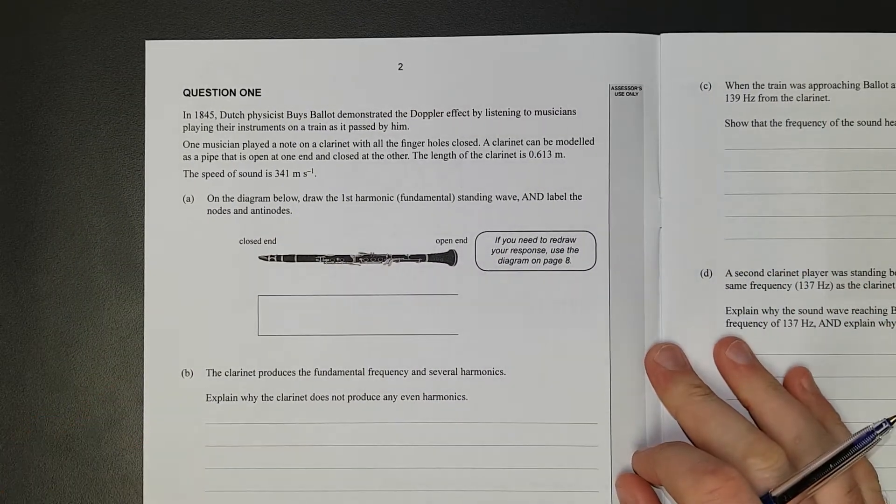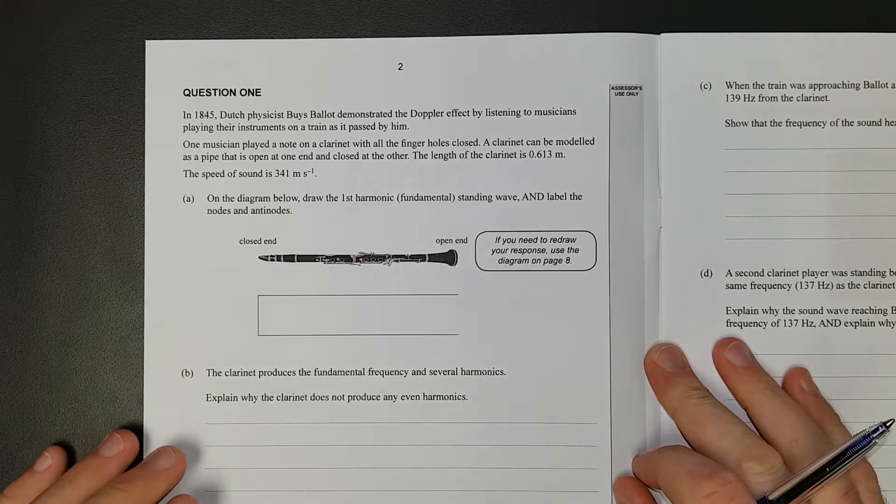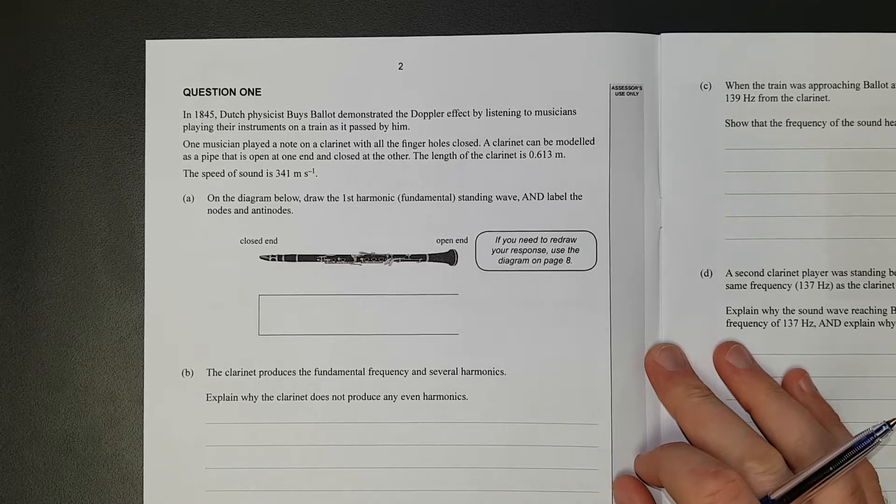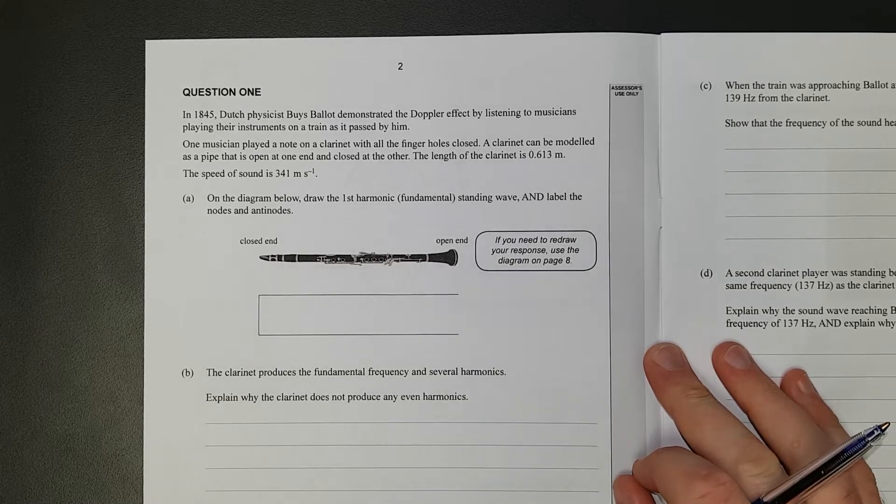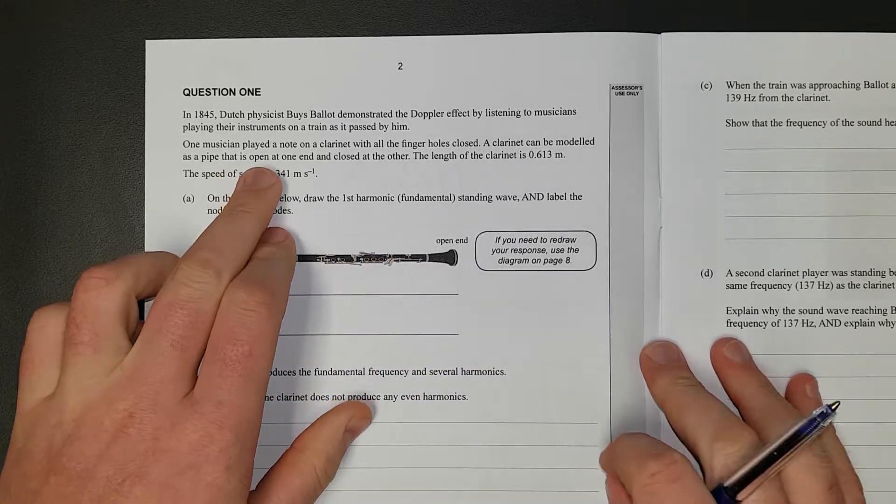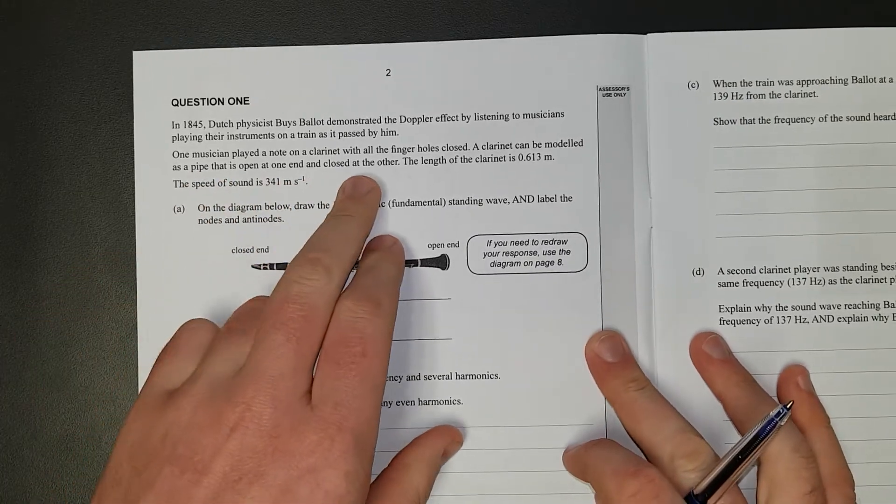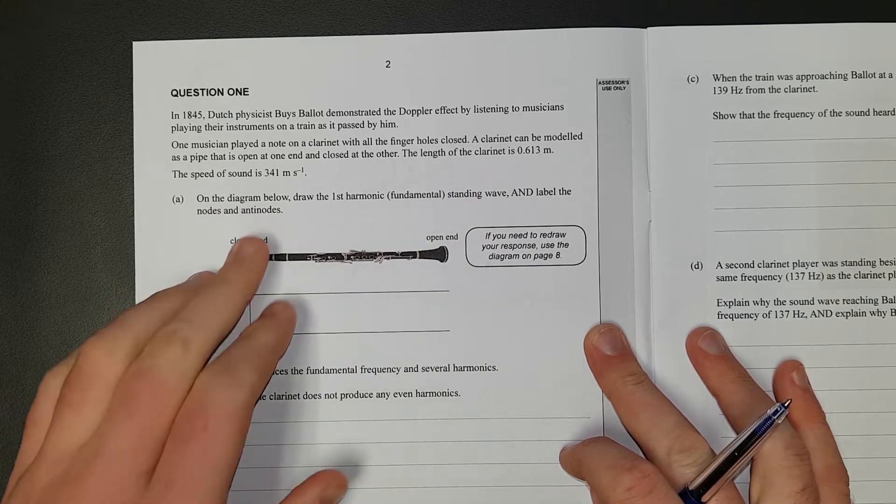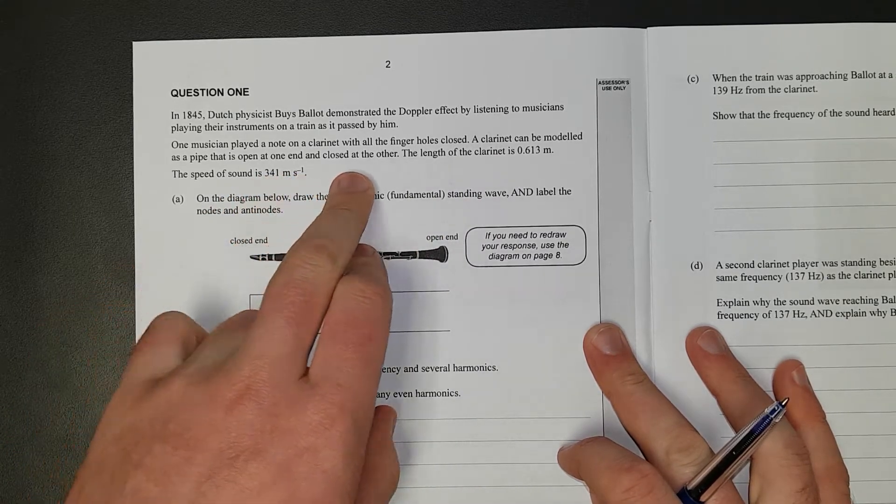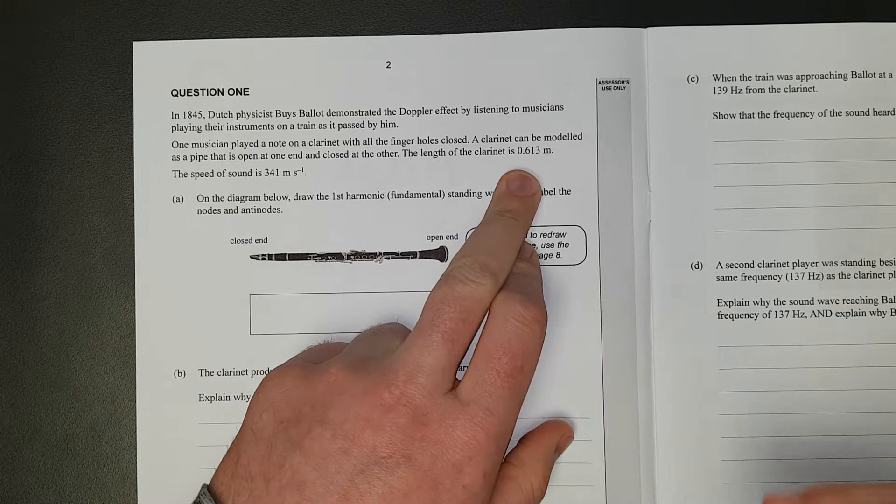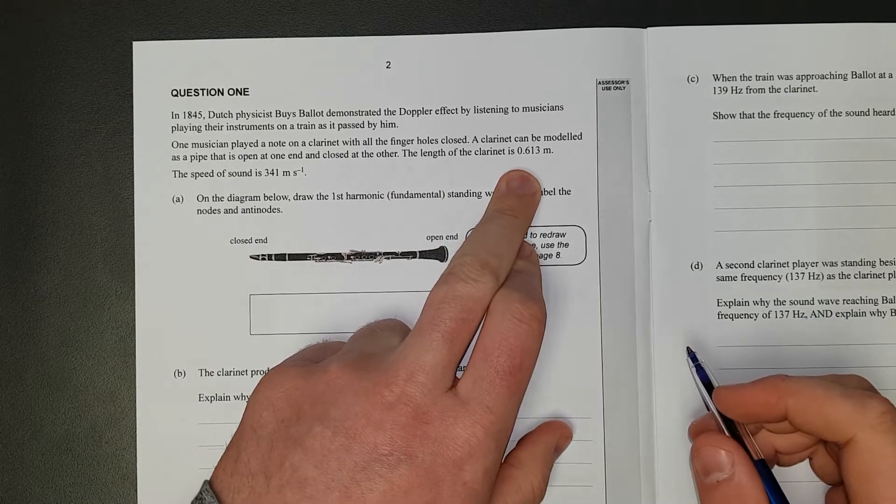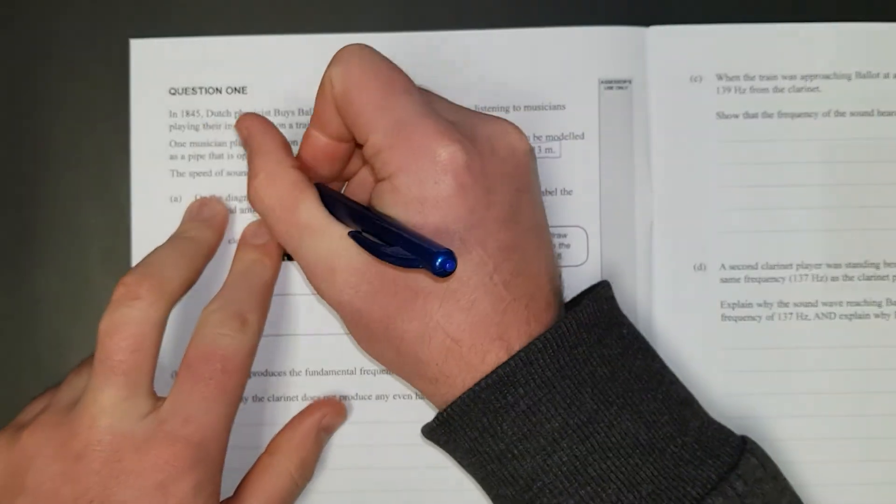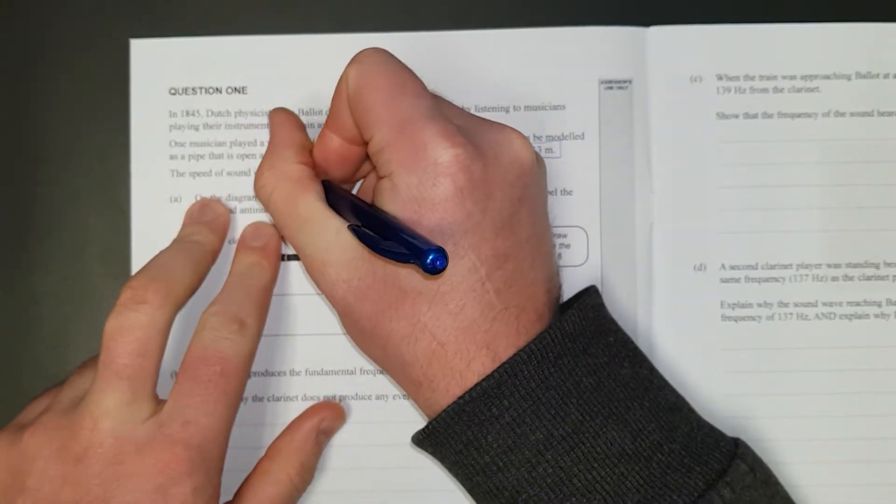Question 1. In 1845, Dutch physicist Beyer's Ballot demonstrated the Doppler effect by listening to musicians playing their instruments on a train as it passed by. One musician played a note with clarinet with all finger holes closed. The clarinet can be modeled as a pipe that is open at one end and closed at the other. The clarinet is 0.613 meters. So we'll just put a box around that because that's something we're going to need to know. The speed of sound is 341 meters per second.